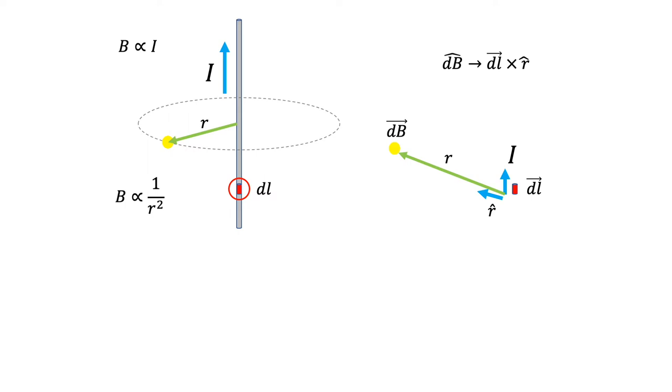So based on this setup, the direction of the magnetic field at this point is out of the page. So right now, the variables are complete. We can now write dB in terms of current, the distance R, which is presented here as 1 over R squared, and the cross product that determines the direction.